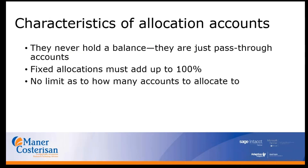A key characteristic of all allocation accounts is that they will never hold a balance — they're just pass-through accounts. The main account number you create will just be entered, and once you post, it will show the breakdown of all the accounts. Fixed allocations must always add up to 100%, and there's no limit as to how many accounts to allocate to.